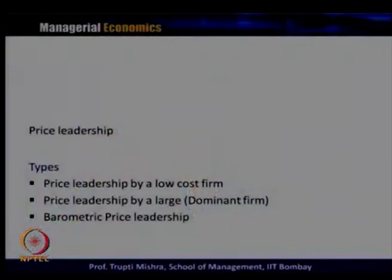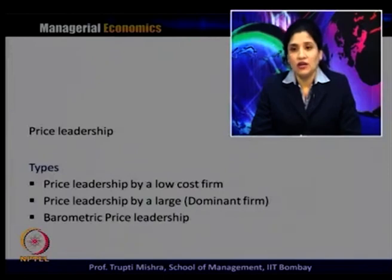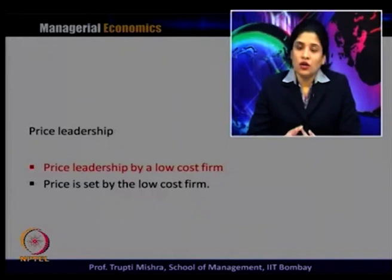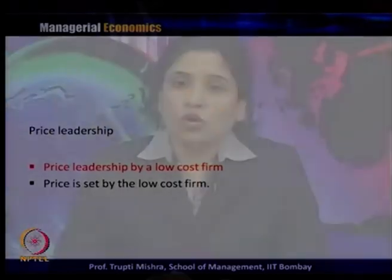We will discuss three types of price leadership: one is price leadership by a low cost firm, second is price leadership by a large dominant firm, and third is barometric price leadership. A low cost firm is one where the cost of production is less. There may be a number of reasons why a firm becomes a low cost firm. The basic argument is that if it is a large firm and the scale of operation is more, in the long run the per unit cost decreases and they emerge as a low cost firm.